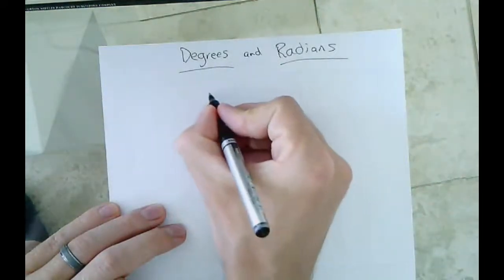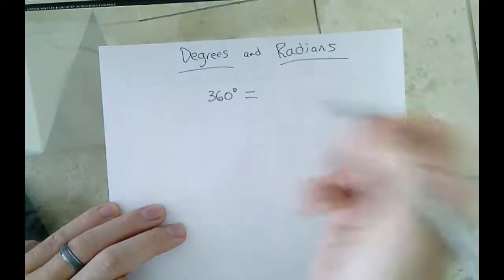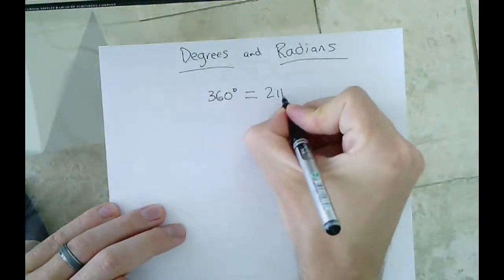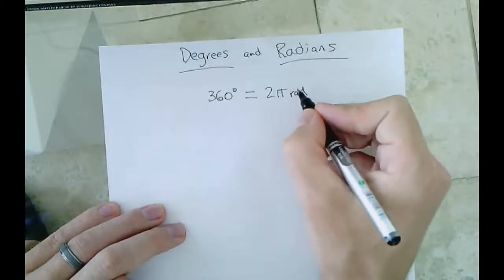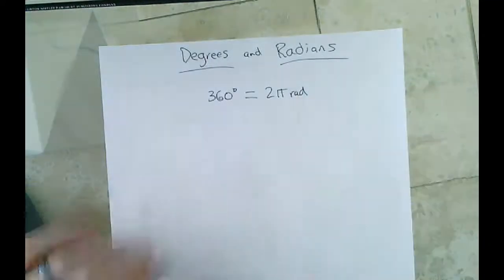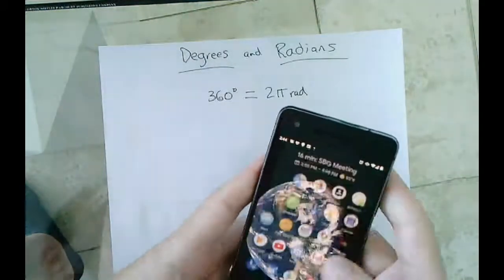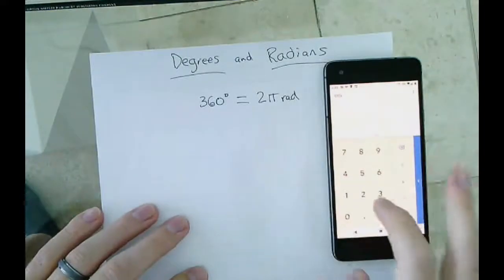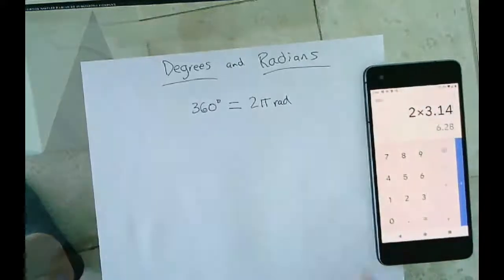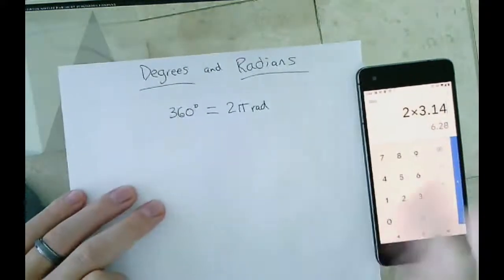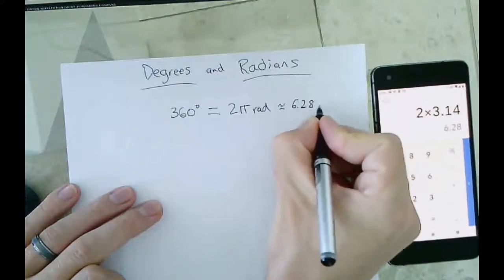So all the way around a circle in degrees is 360 degrees. And yesterday you found out that that meant in radians 2π radians, which is how we'd write the exact value. But I also want you to know that π is just a number, 3.14. And if we take out our handy-dandy calculator right here, and we do 2 times 3.14, we get 6.28. So I want to also write this in its approximate form right here, approximately 6.28 radians.